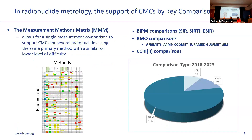Running a key comparison is a hard task, requiring the treatment of radioactive solution, sample preparation, and carrying out measurements with state-of-the-art techniques. So to optimize the process, we have set up the measurement method matrix, the MMM. The MMM allows a single measurement comparison to support CMCs for several radionuclides using the same primary method with a similar or lower level of difficulty, meaning that with one key comparison result, we can obtain CMCs for several radionuclides.